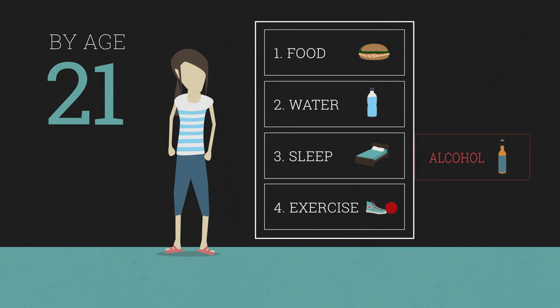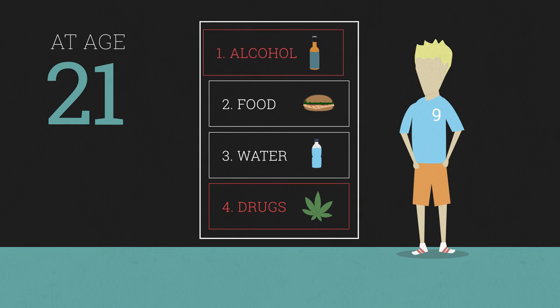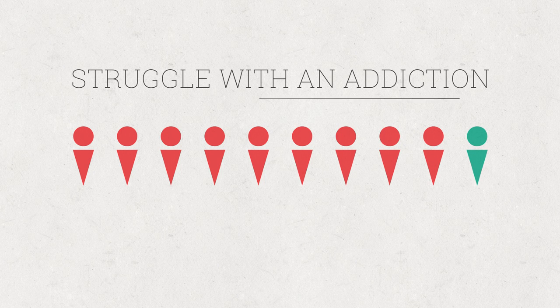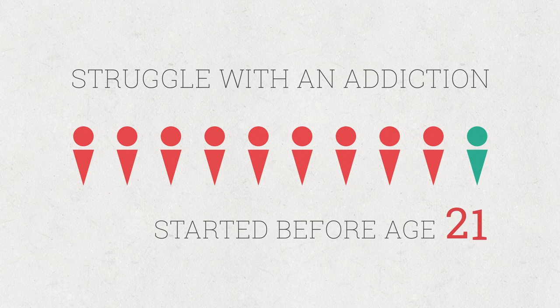The flip side is that once you are 21, it becomes very difficult to remove these harmful substances from your survival hierarchy. Studies show that 9 out of 10 people who currently struggle with addiction started drinking, smoking, or using before the age of 21.